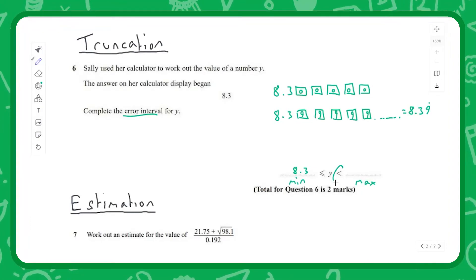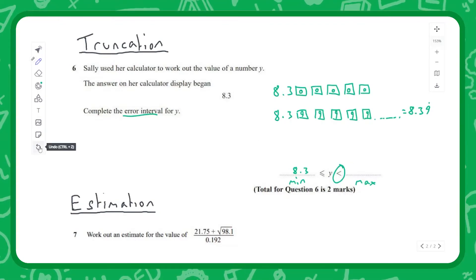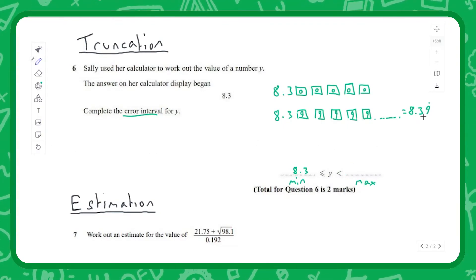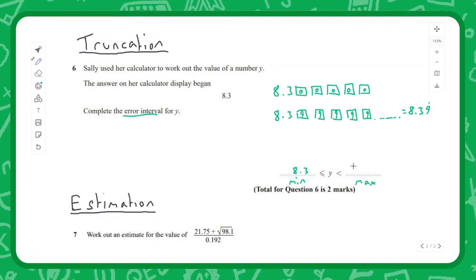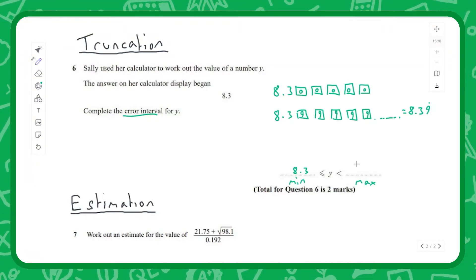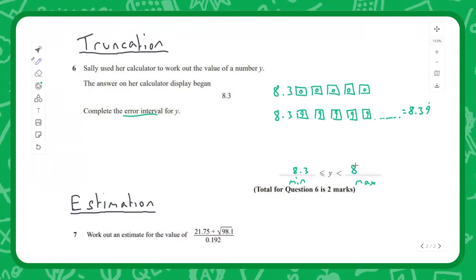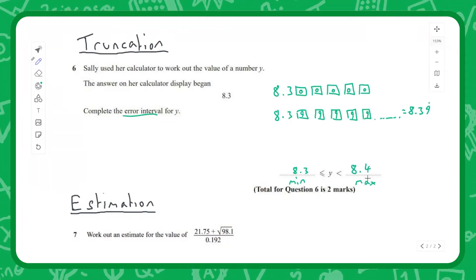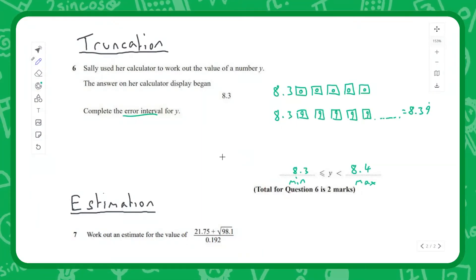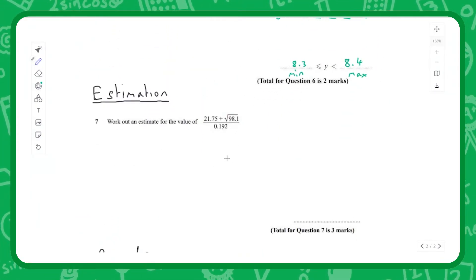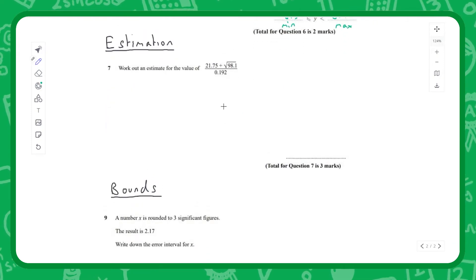Well, that's just equal to 8.39 recurring. So if we have 8.39 recurring, that's going to be our largest value that we could possibly have. We've got to be careful though, because we've got this inequality sign that says we actually want to find the number that we have to be less than. Because we know we could go up to and include 8.39 recurring, the number that we'd have to be less than is going to be the number directly next to that number, which is going to be 8.4. So that's going to be our maximum number.